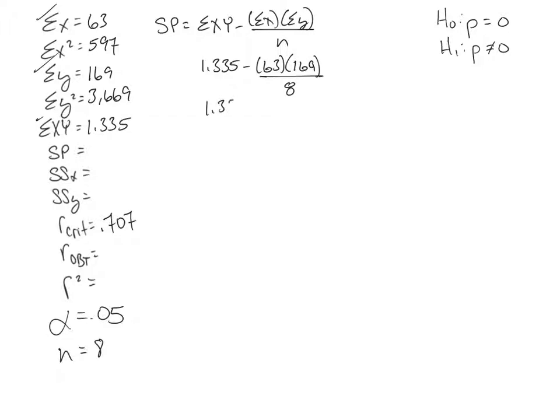So I have 1,335 minus the 63 times 169, right? So 10,647 divided by, again, our sample size of 8, or 1,335 minus 1,331. So my SP is 4.